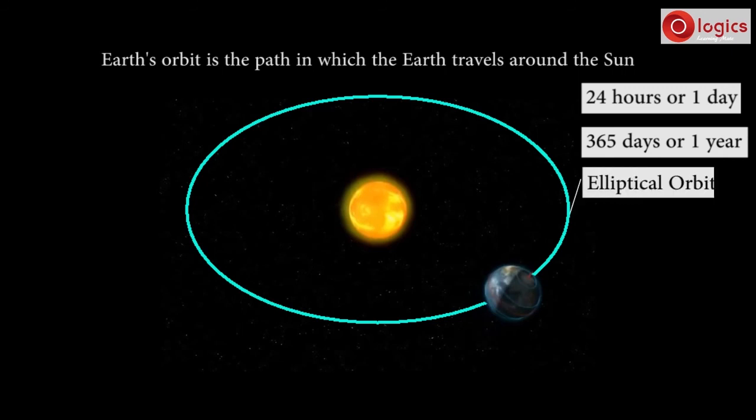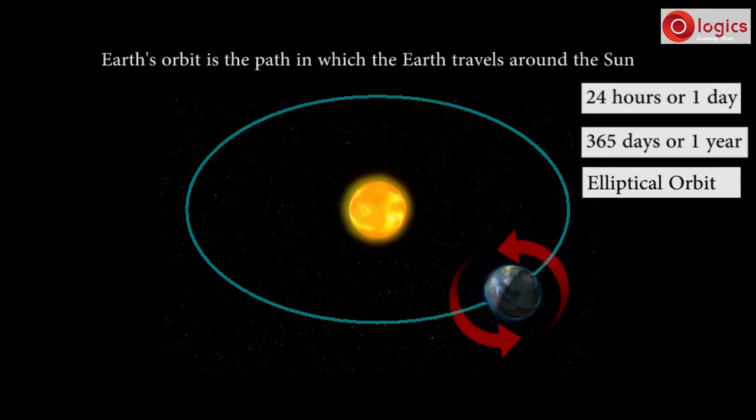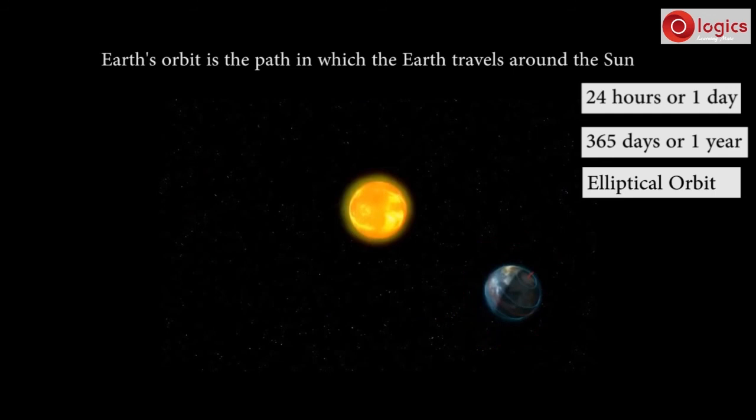Earth's orbit is elliptical. Earth has two rotations, it rotates on its own and at the same time it rotates around the Sun.